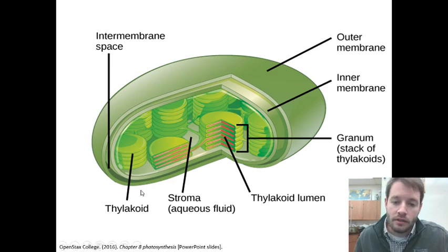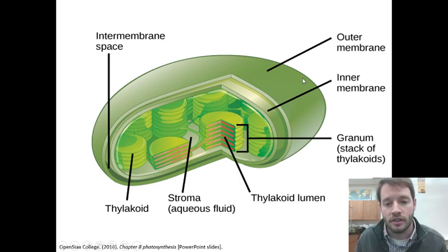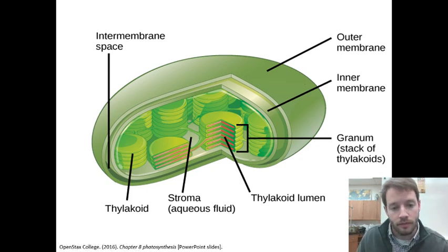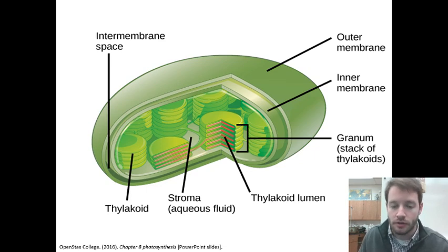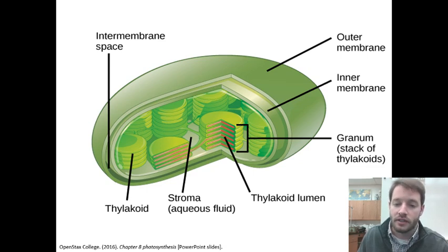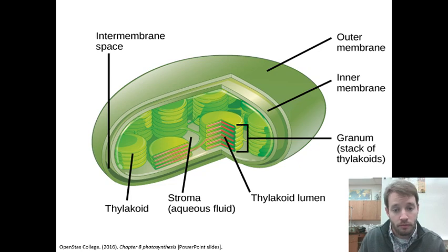Looking at this chloroplast, you will first notice that it is green. Chloroplasts in particular are green because they have a pigment called chlorophyll. Chlorophyll absorbs high energy light and reflects lower energy or unwanted light. The greens and yellows would be reflected, and the higher energies — the blues, indigos, and violets, and even sometimes the low energy reds — are going to be absorbed by chloroplasts.